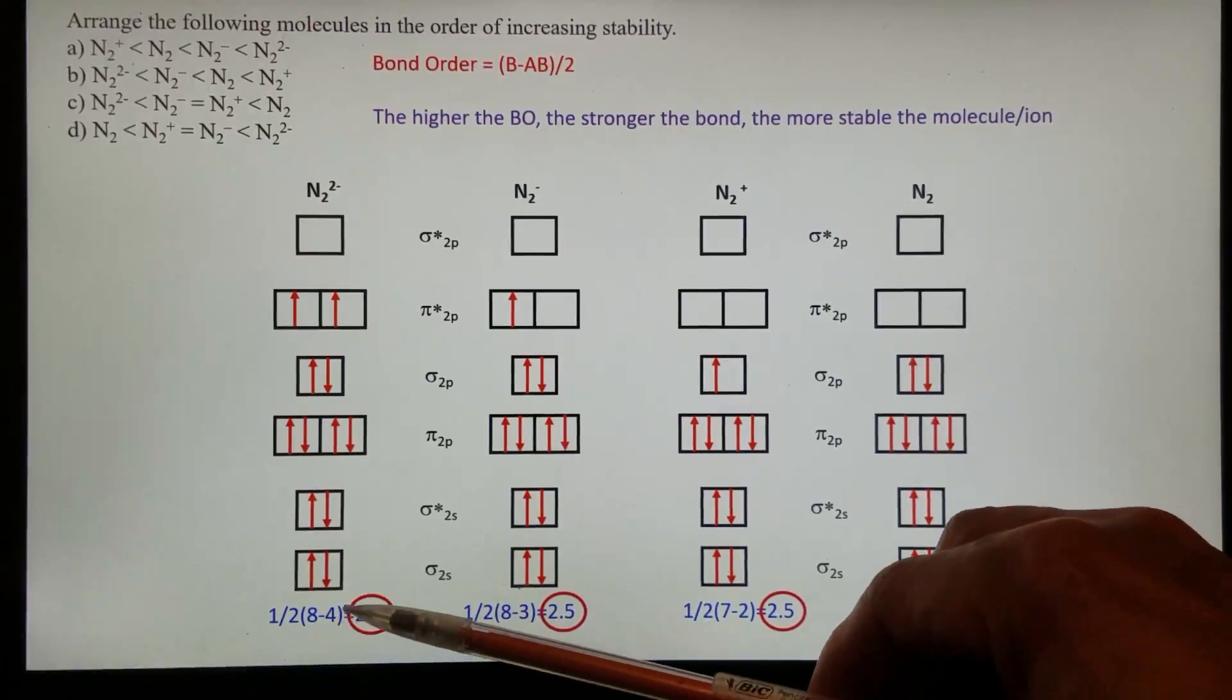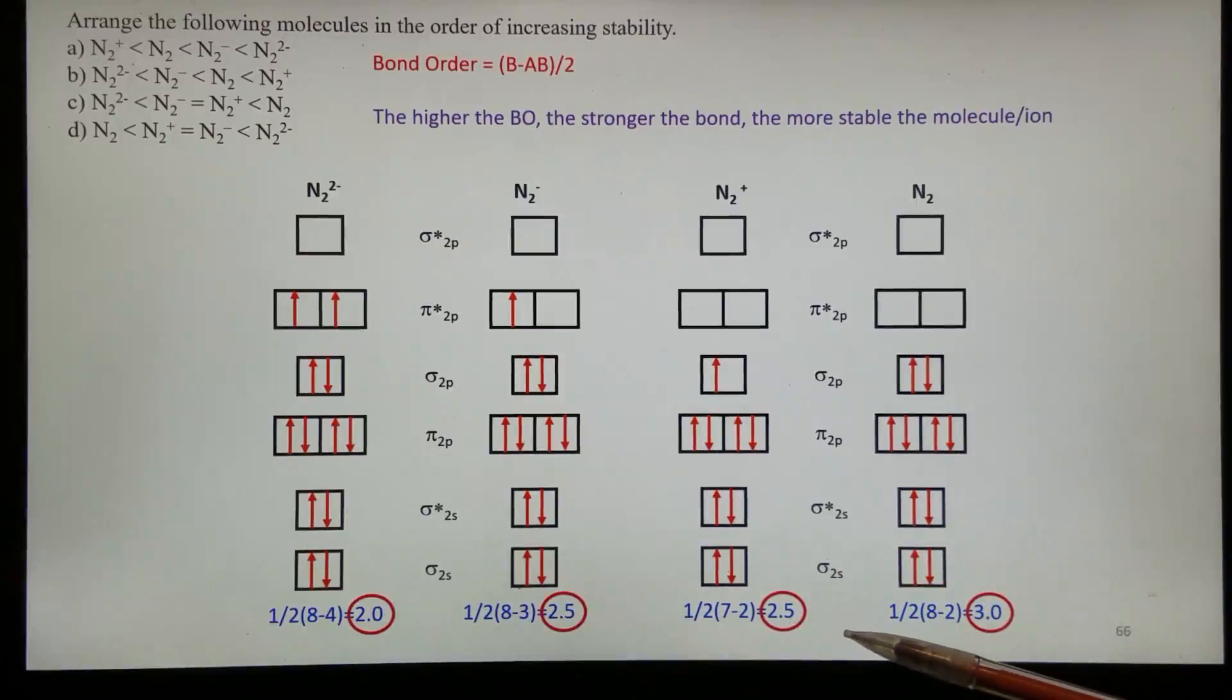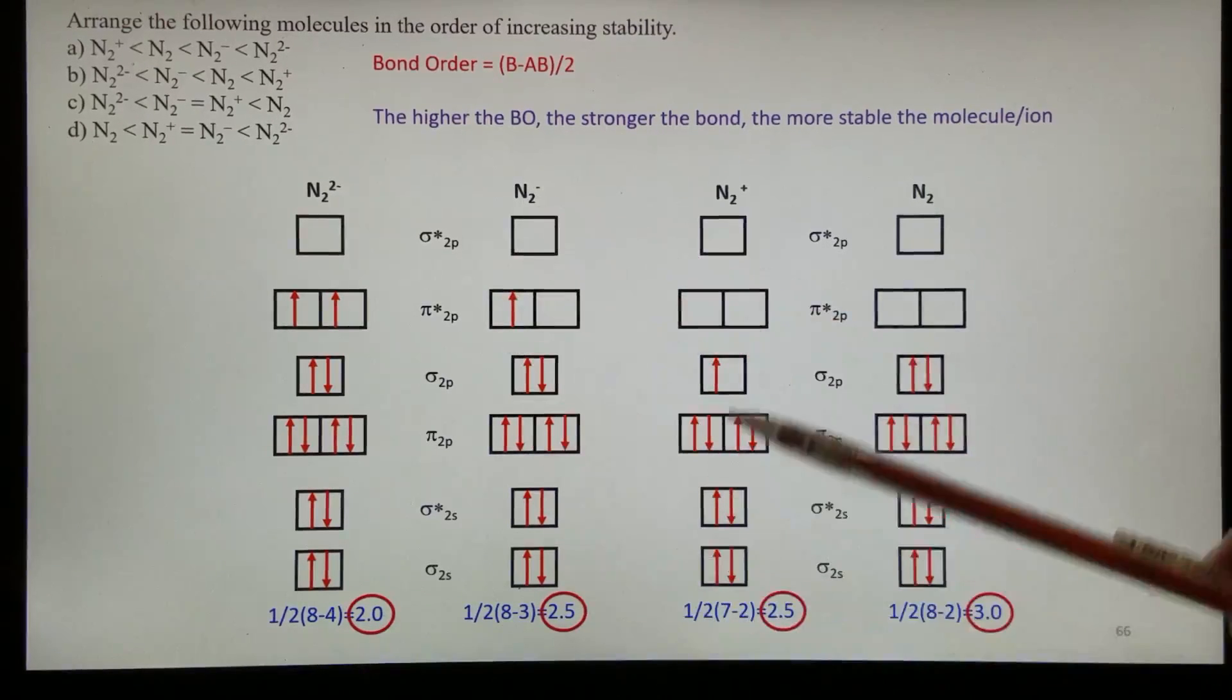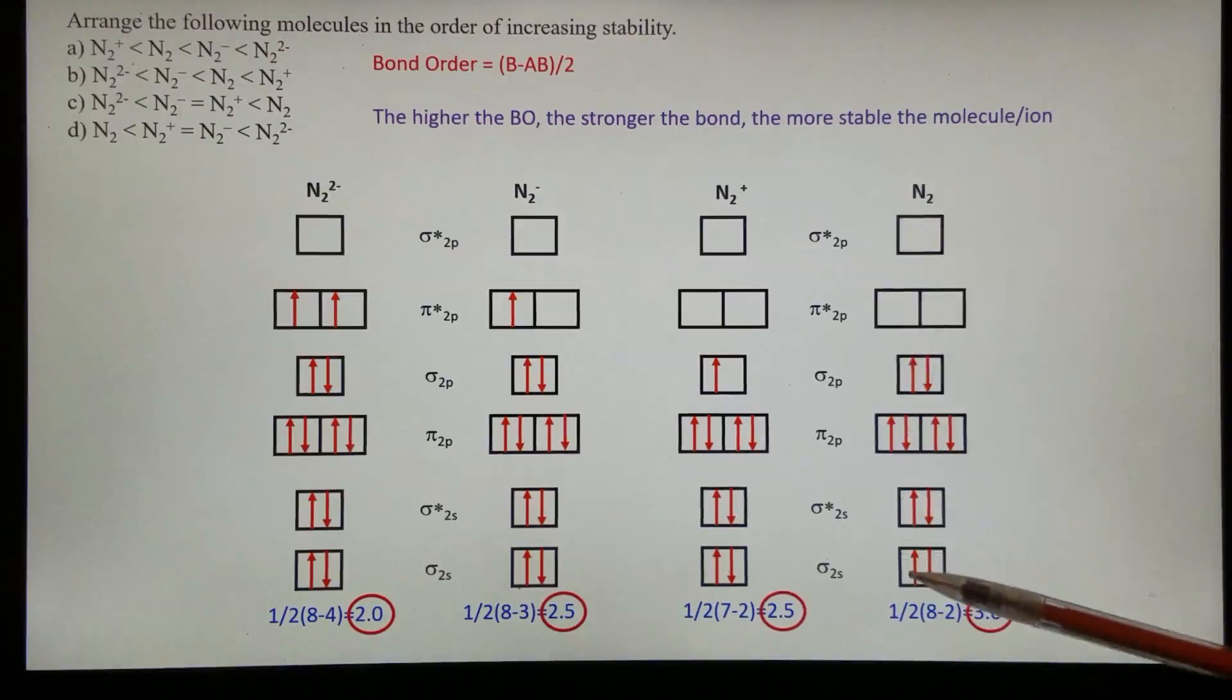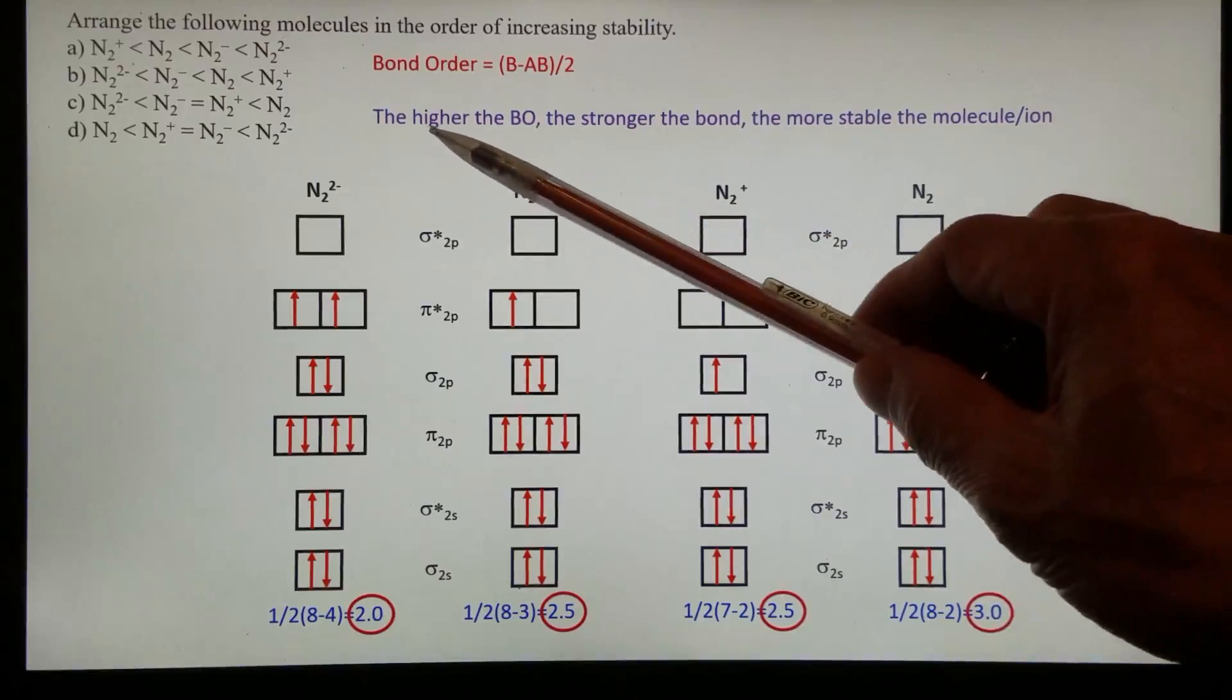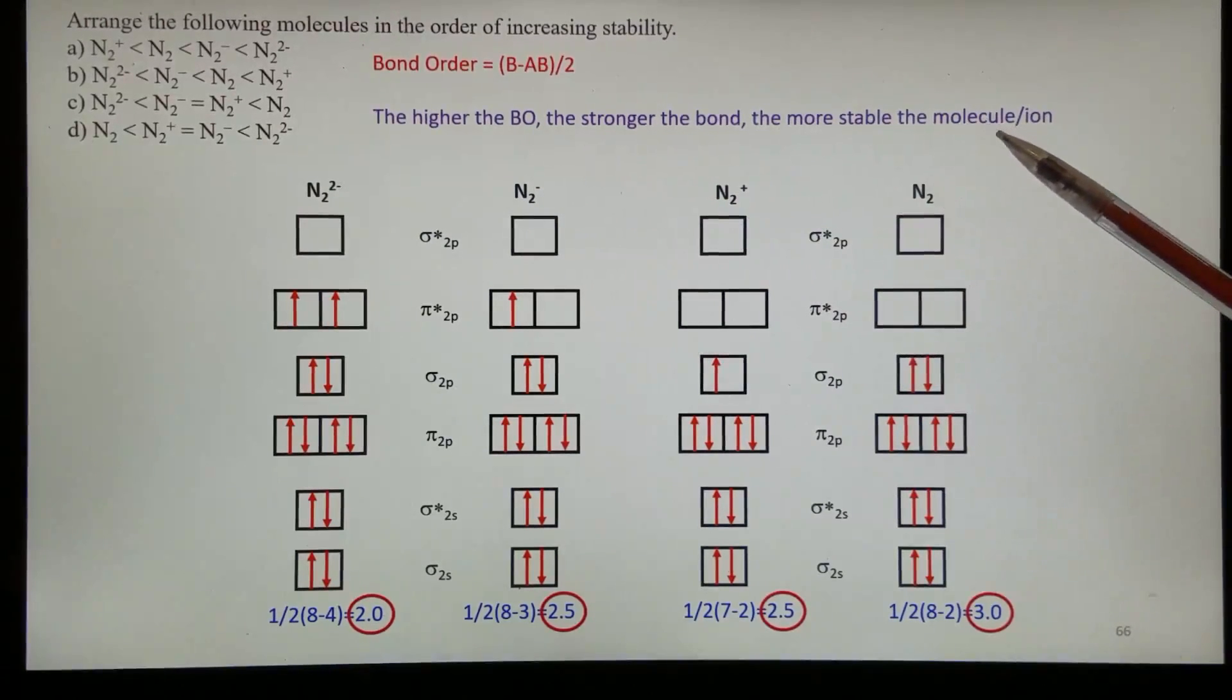Now you see, from left to right, the bond order increases, except the two in the middle, they have the same bond order. So therefore, the most stable molecule or species should be N2, the one with the highest bond order. The higher the bond order, the more stable the species.